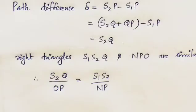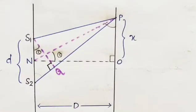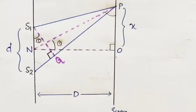If we consider NP and NO, they are approximately equal, because the x distance from P to N is a small value compared to D.